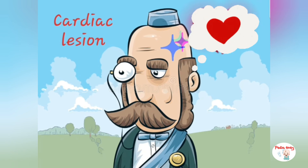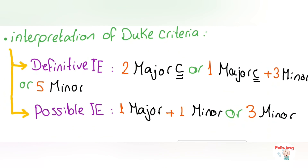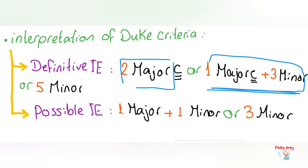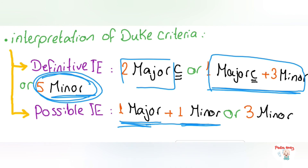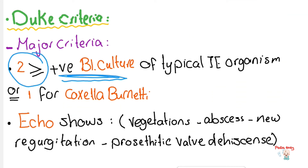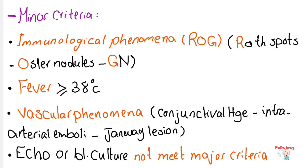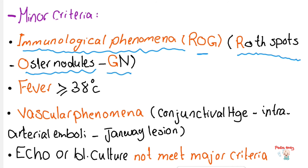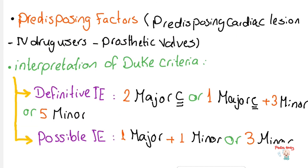For the diagnosis of infective endocarditis, we need: two major criteria; or one major and three minor criteria; or all five minor criteria. One major and one minor, or three minor criteria raises the possibility. The major criteria are two or more positive blood cultures of a typical organism, or positive typical echo finding. Minor criteria are: immunological phenomena (RAJ — Roth spots, Osler nodules, glomerulonephritis); fever ≥38°C; vascular phenomena (conjunctival hemorrhage, intra-arterial embolism, Janeway lesions); positive echo or blood culture not meeting major criteria; and predisposing factors like intracardiac lesion, IV drug use, or prosthetic valve.